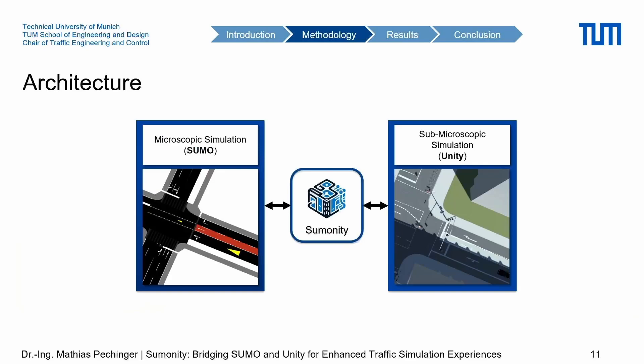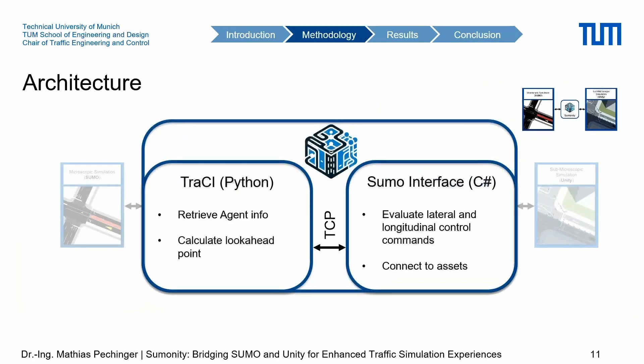Let's get into more detail about the SUMONITY architecture. We use the TraCI interface, using basic functions to get agent information. We also calculate a so-called look-ahead point there, which I will explain later as it's specific to the control theories we apply. This part connects via a TCP connection to the Unity environment in C#, where we evaluate lateral and longitudinal control commands and connect to assets. For each agent spawned in SUMO, we also spawn a corresponding agent in Unity.